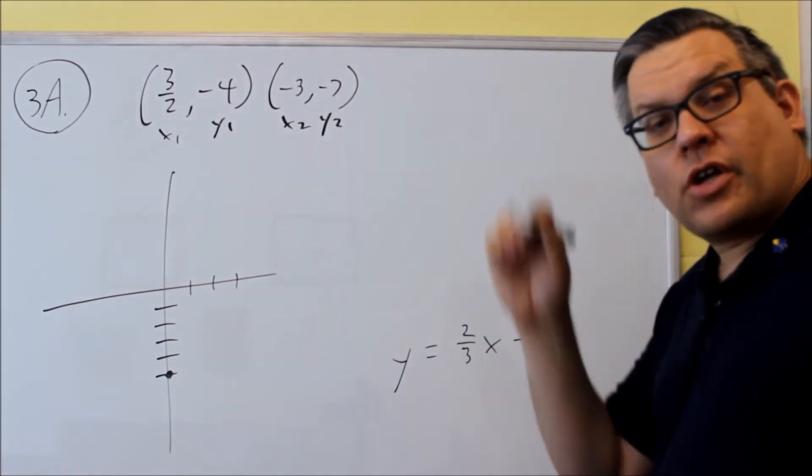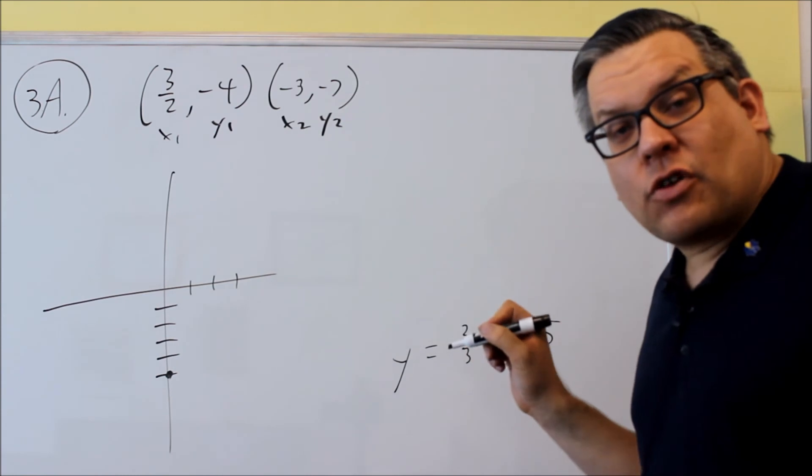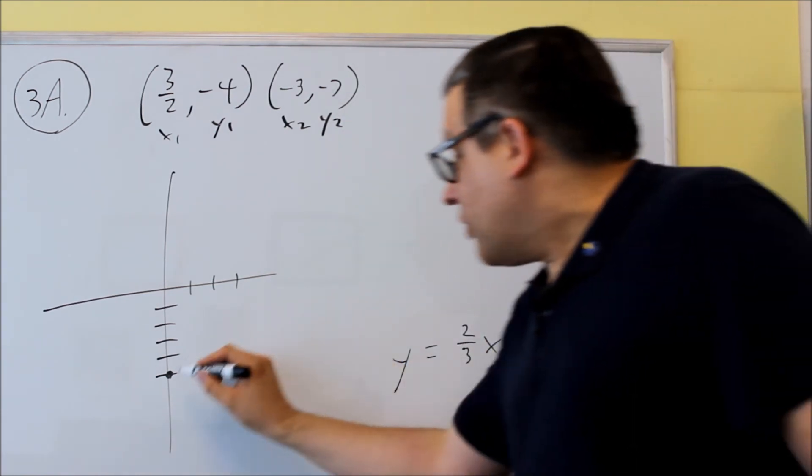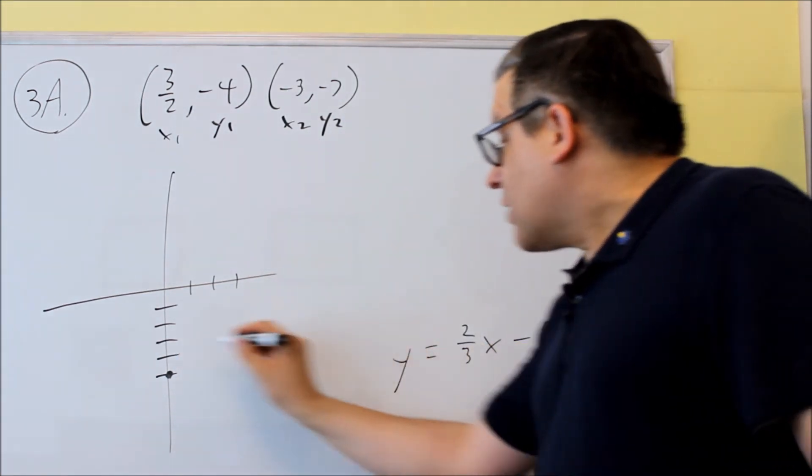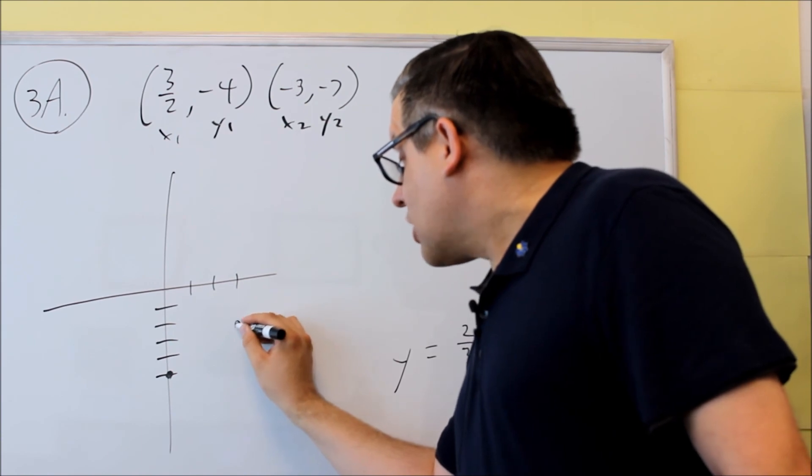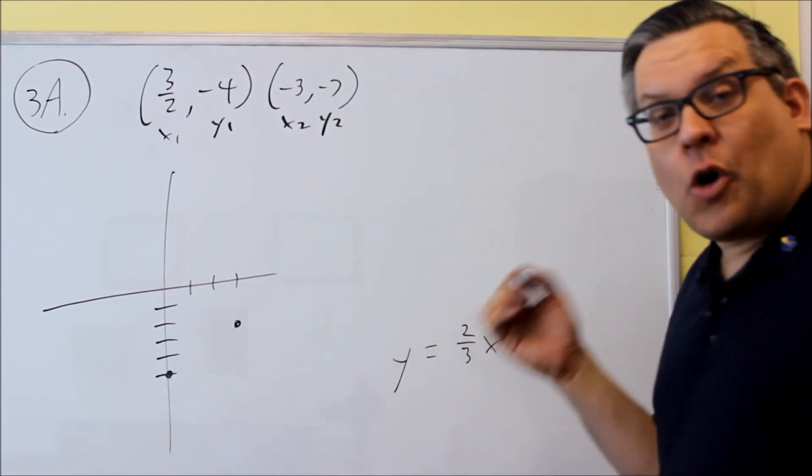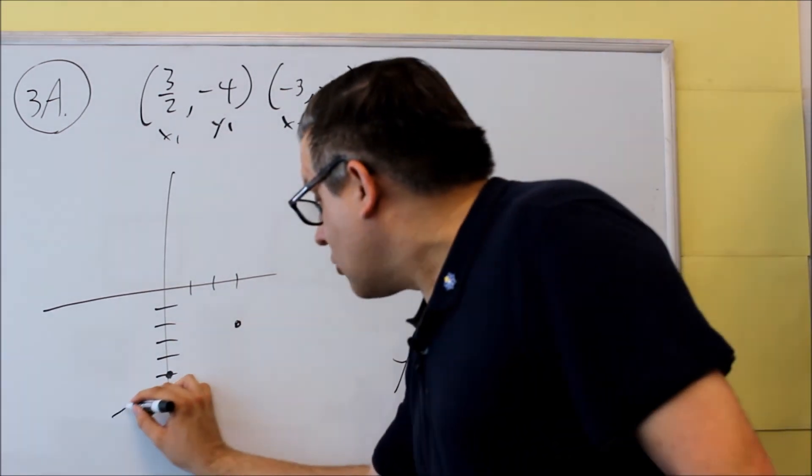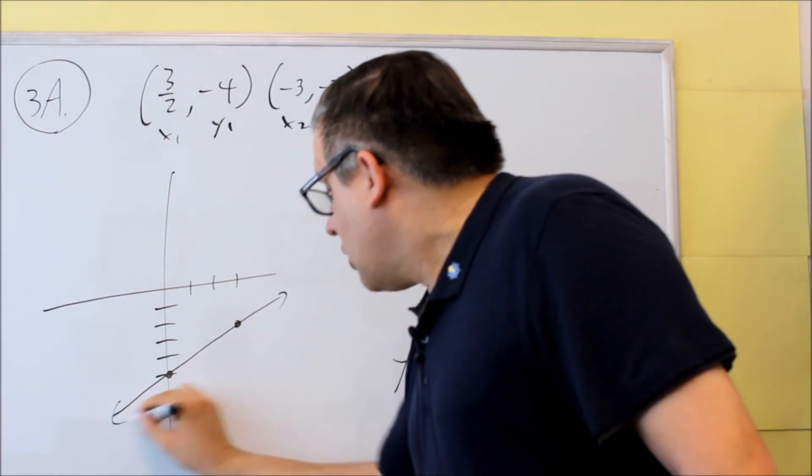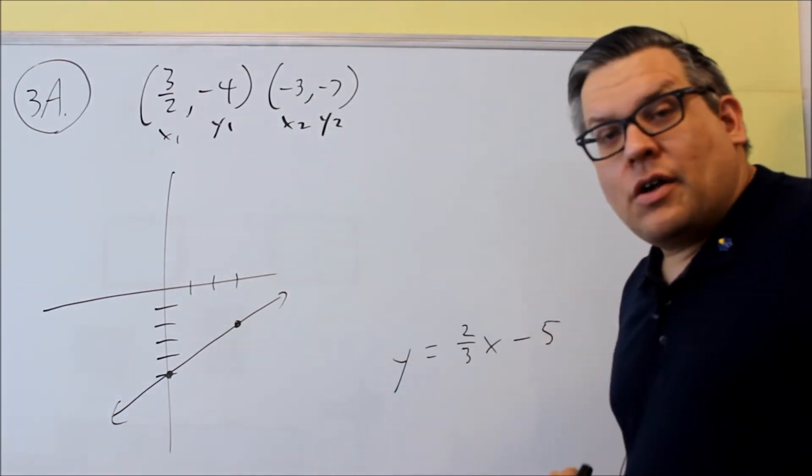Top number is your up and down movement. The bottom number is your left and right movement. If it's positive, we go up. The bottom number is positive, we go to the right. So that's going to give us our next point right there. All we need is two points to draw a line. So once we have those two points, we'll connect them. And so that would be your graph.